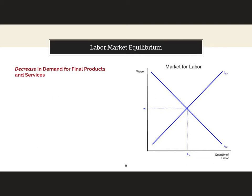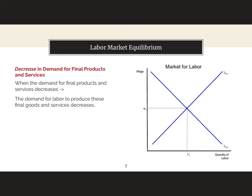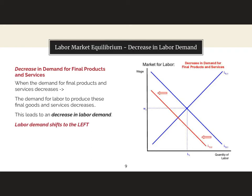Let's suppose there's a decrease in demand for final products and services. When the demand for final products and services goes down, the demand for labor to produce those final goods and services goes down. There's a decrease in labor demand as a consequence, and the labor demand curve shifts to the left from our blue labor demand curve to this red labor demand curve.